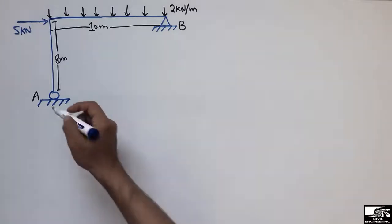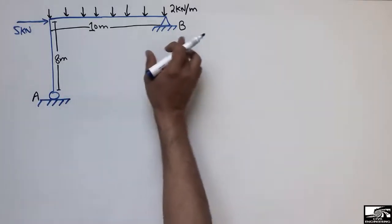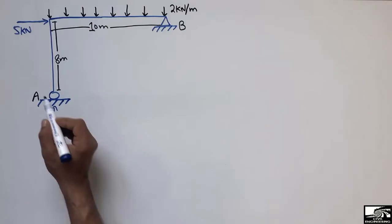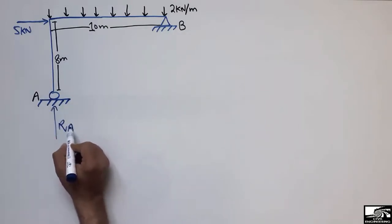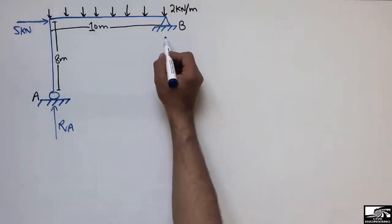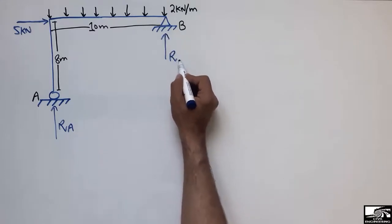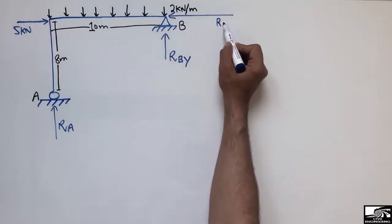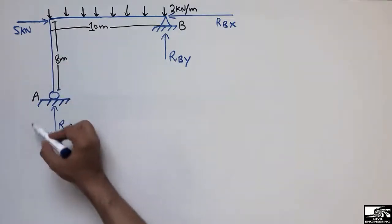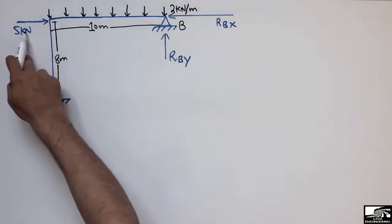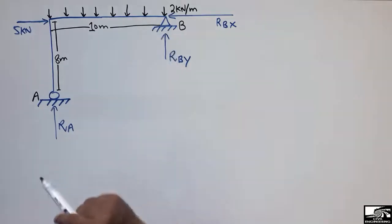First, we need to find the support reactions of these two supports. The first is the roller support, which can only resist vertical forces, so we have RA acting vertically. The other is the hinge support, which can resist both vertical and horizontal forces — RBY and RBX. Since there is no roller support to resist horizontal load, all the horizontal load will be supported only by the hinge support.